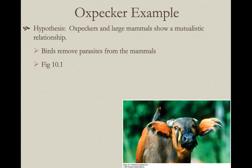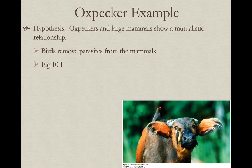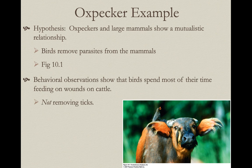The birds on this ox are called oxpeckers. They land on a variety of large mammals, and the hypothesis proposed is that this is a mutualistic relationship — the birds are removing parasites from the mammals, getting food while benefiting the host by removing parasites. This seemed pretty obvious to people who casually observed these interactions, and for a long time it was just assumed to be what was happening. But if you actually collect data to test the hypothesis, you find something else is going on.